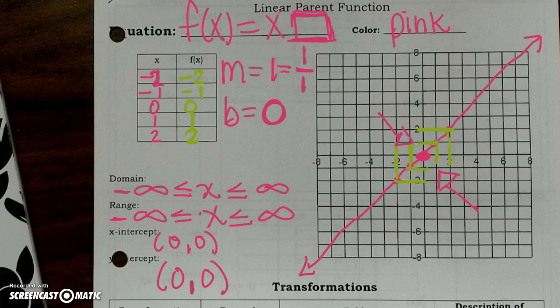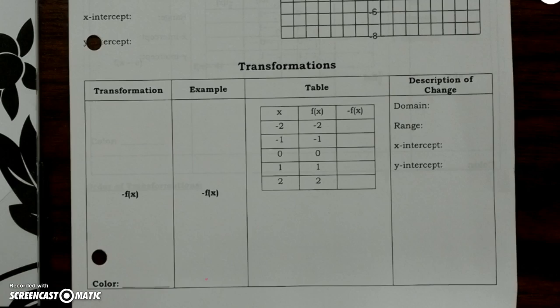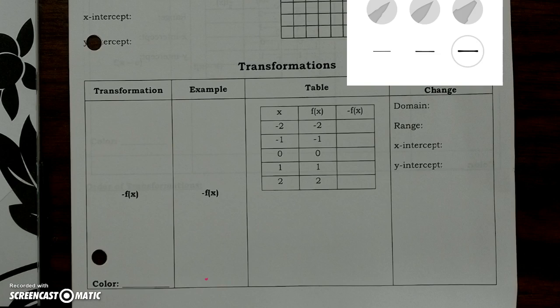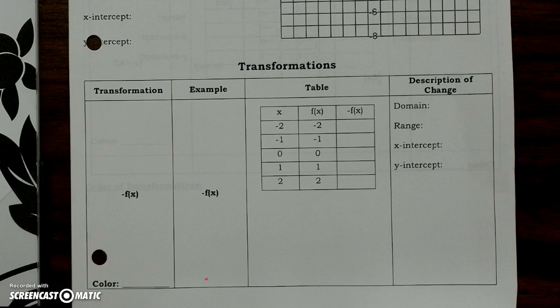So that's all the work needed for this first part. Now we're going to go ahead and do the transformation portion. I'm going to use a different color — purple. The transformation given is a negative f of x. So if we have a negative f of x, what type of transformation is that? Looking at my notes, it's a reflection across the x-axis.